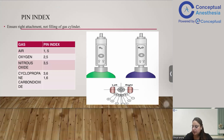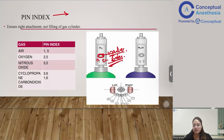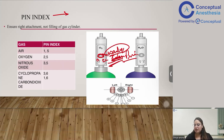Another safety feature is the pin index system. When you look at the cylinder, you'll see a washer and holes for pins. The pins are on the machine side; the holes are on the cylinder side. The pin index ensures correct attachment of the cylinder. However, its drawback — which examiners frequently ask — is that it ensures the right attachment but does not ensure the right filling of the gas inside.